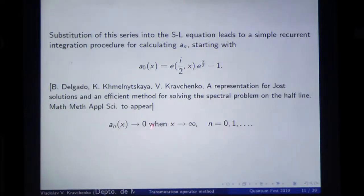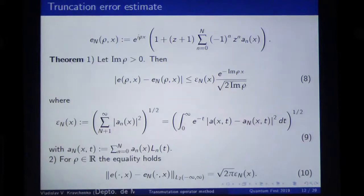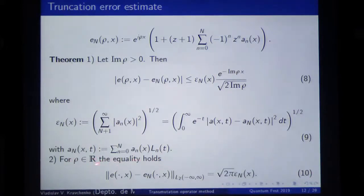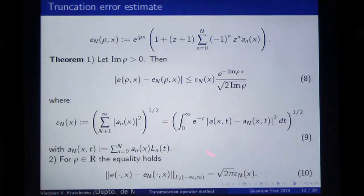All these coefficients can be constructed by a recurrent integration procedure which is quite simple. We have estimates which are always important. If we consider the truncated series, these estimates can be shown: when the imaginary part of rho is greater than 0, we have this estimate — roughly speaking, the greater the imaginary part of rho, the better the estimate. For real rho, we just have the equality obtained from L2 considerations. The difference between the exact solution and the approximate solution in the L2 norm can be estimated quite easily.